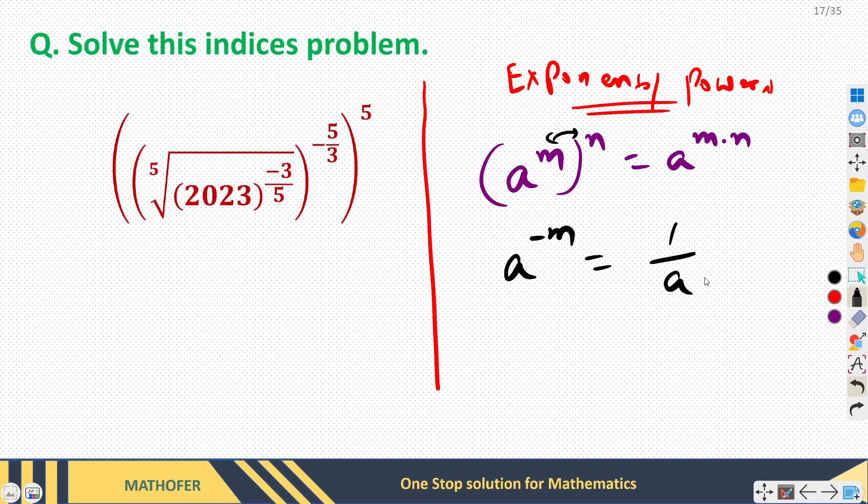One more property could be nth root of a is written as a raised power 1 by n. So these three properties should be sufficient to solve this question.